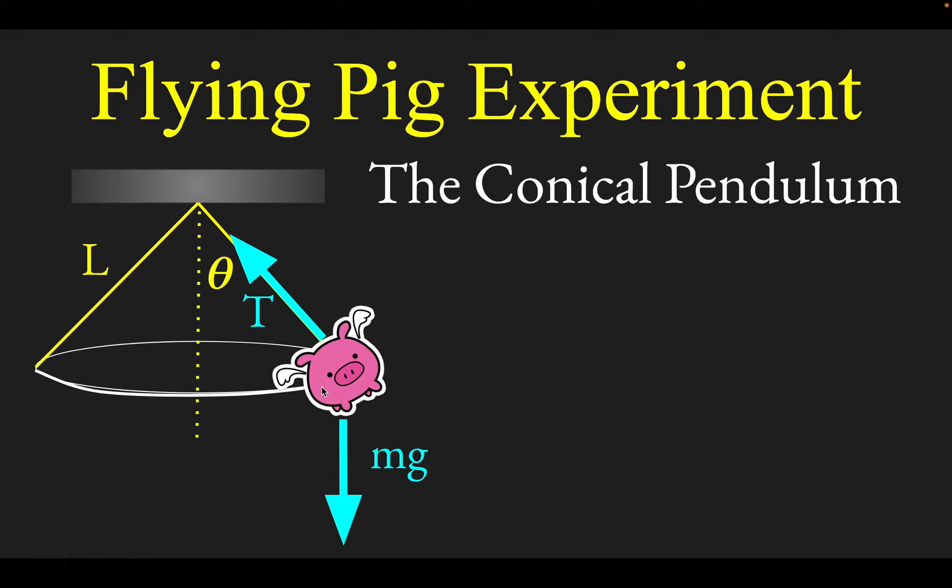Since the pig goes in a circular path, the acceleration of the pig is directly toward the center of the circle. We're going to orient our axes for considering the motion of the system such that one of them points right along the center.